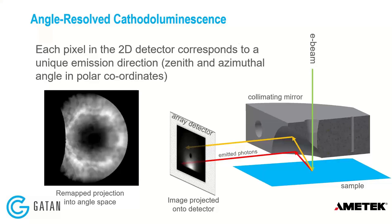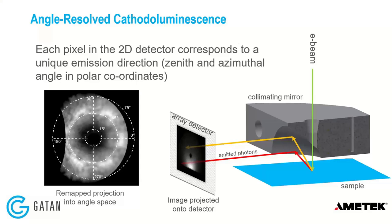This is a typical ARCL emission pattern showing anisotropy in emission direction. In the center you're observing the normal direction — which we can't actually see, because you see a black dot corresponding to the missing segment of solid angle from the aperture in the mirror where the beam passes through. Once remapped into angle space, scale bars can be added showing the polar angle away from normal and the azimuthal rotation. I typically won't display those scale bars — just know that's basically what we're looking at from here on.